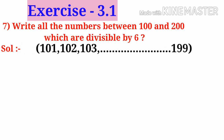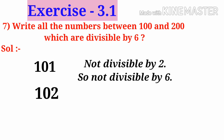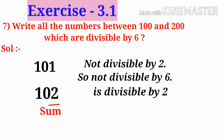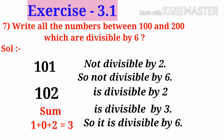Numbers between 100 and 200 range from 101 to 199. Let us take the first number 101. It has 1 in its unit's place, so it is not divisible by 2, and therefore not divisible by 6. Let us take 102. It has 2 in its unit's place, so it is divisible by 2. The sum 1+0+2 = 3 is a multiple of 3, so it is divisible by both 2 and 3. Therefore 102 is divisible by 6.